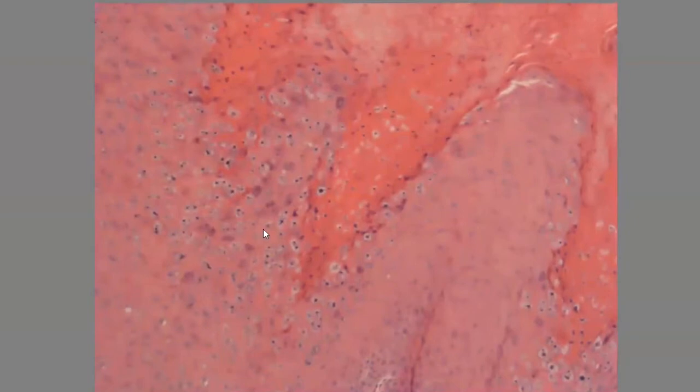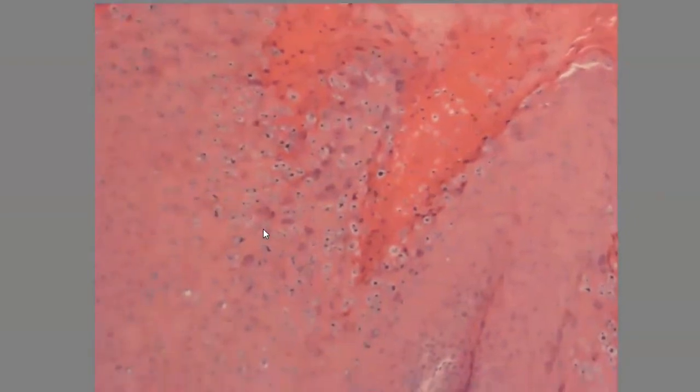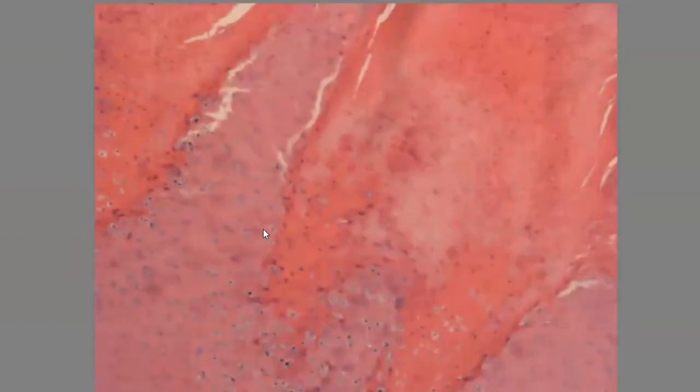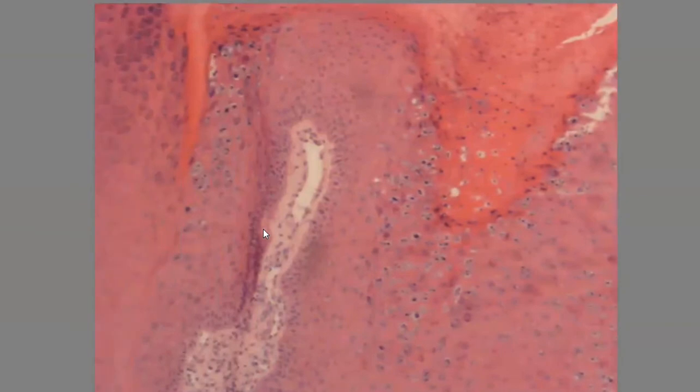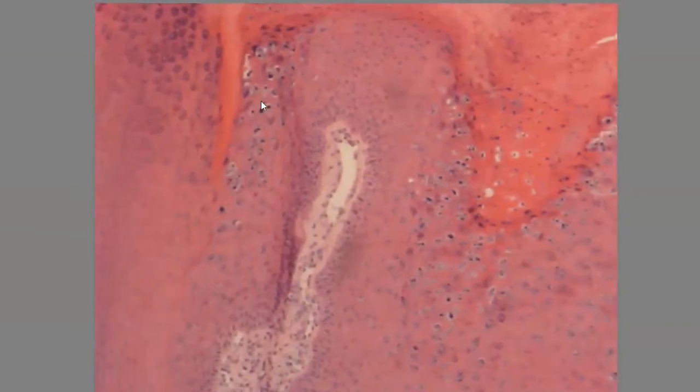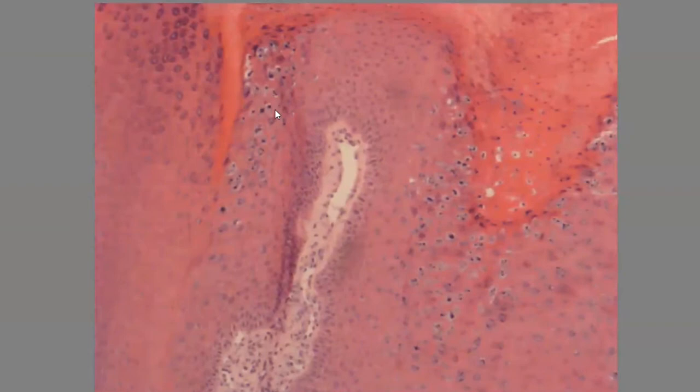We can see here also at this part, I want to show you some perinuclear halos that may happen at this layer, like for these cells. These are koilocytic cells with the perinuclear halos.